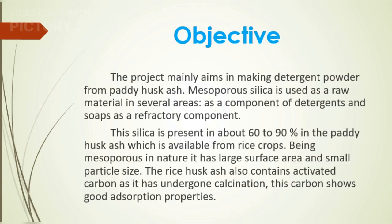The object of the project mainly aims at making detergent powder from paddy husk ash. Mesoporous silica is used as a raw material in several areas, including as a component of detergents and soaps and as a refractory component.